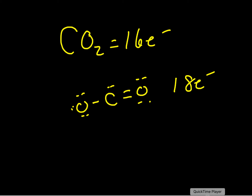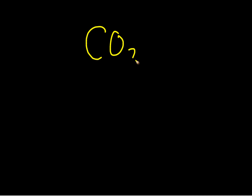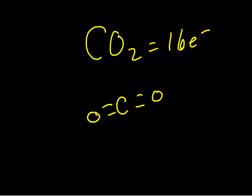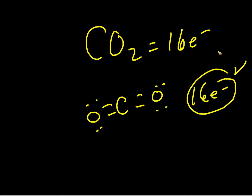Let's try two double bonds. CO2 has sixteen valence electrons, and carbon is always our central atom. Counting: two, four, six, eight, ten, twelve, fourteen, sixteen — sixteen electrons in our structure. Sixteen electrons is what we started with. We're finished.